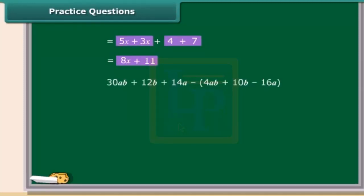Now, the question is to subtract 4ab plus 10b minus 16a from 30ab plus 12b plus 14a. We have to use the same criteria as we have used for the addition. Bring the like terms together, taking into consideration the sign of the terms. So, on rearranging, we get 26ab plus 2b plus 30a.